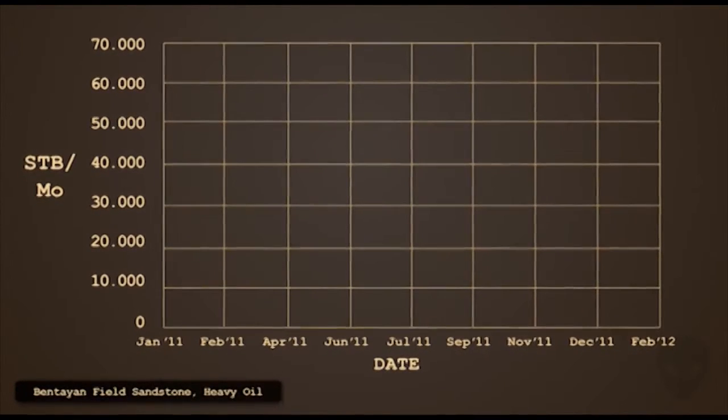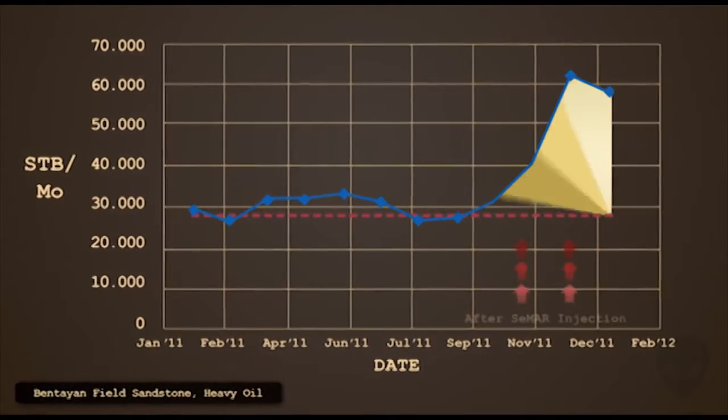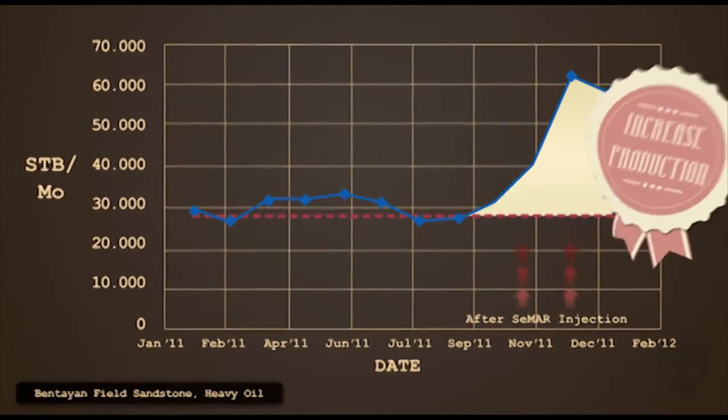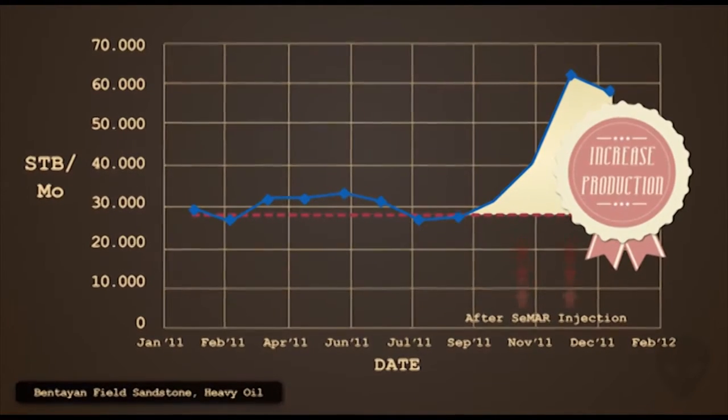Pantayan field, which has oil properties less than 20 API with sandstone rock type, has increased its oil production by twice in two months by only being injected with SMAR using huff and puff method.